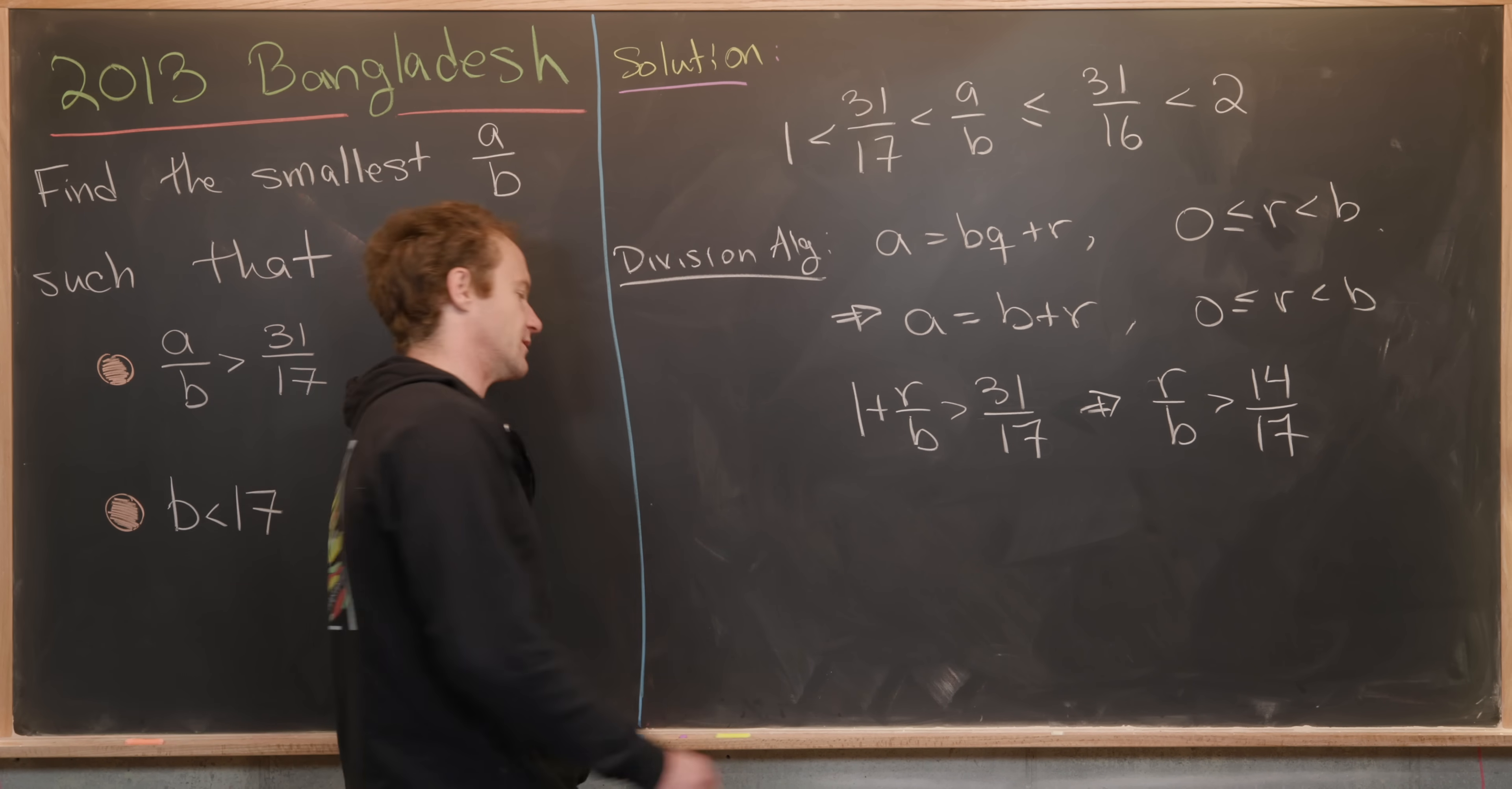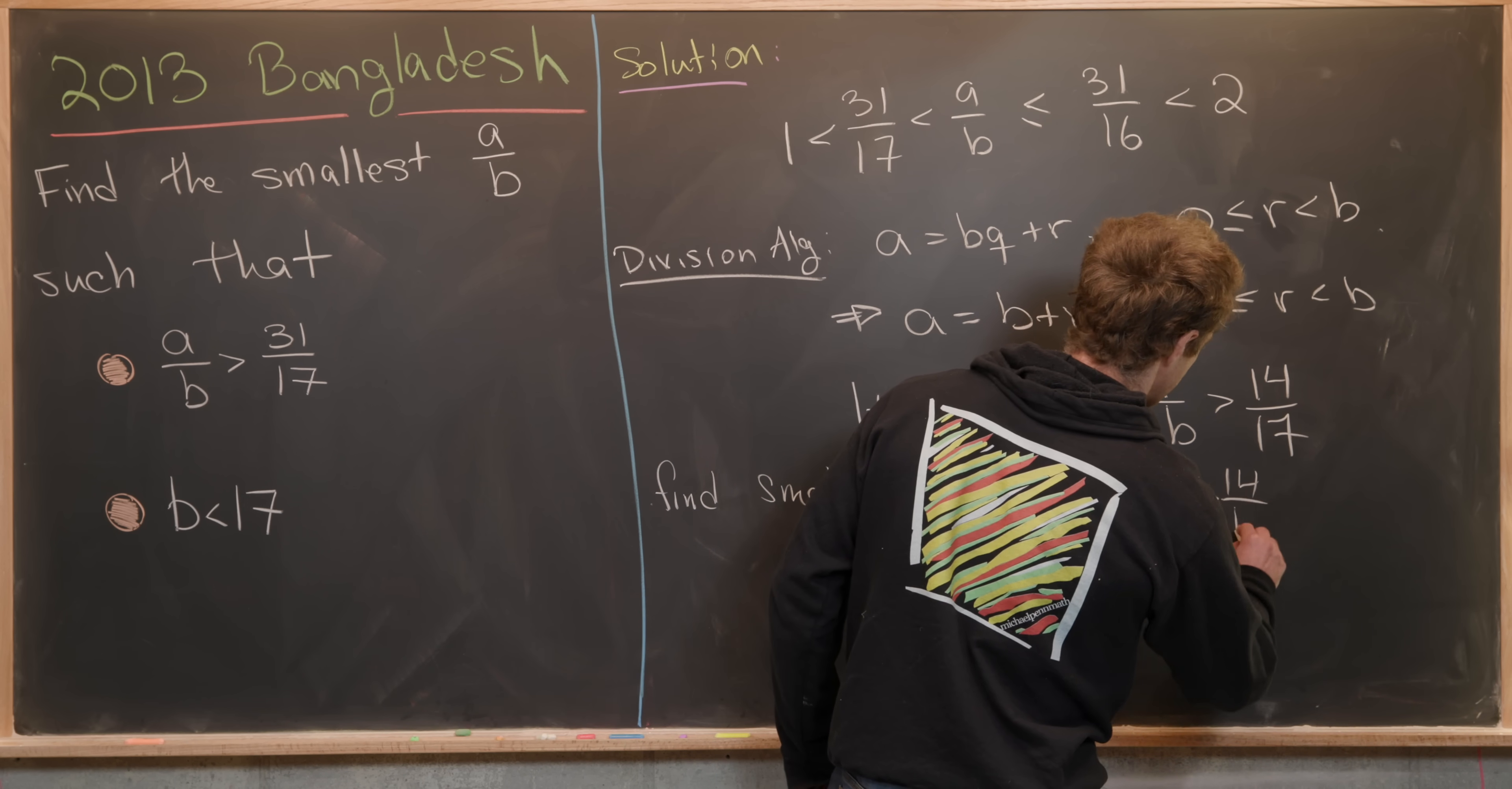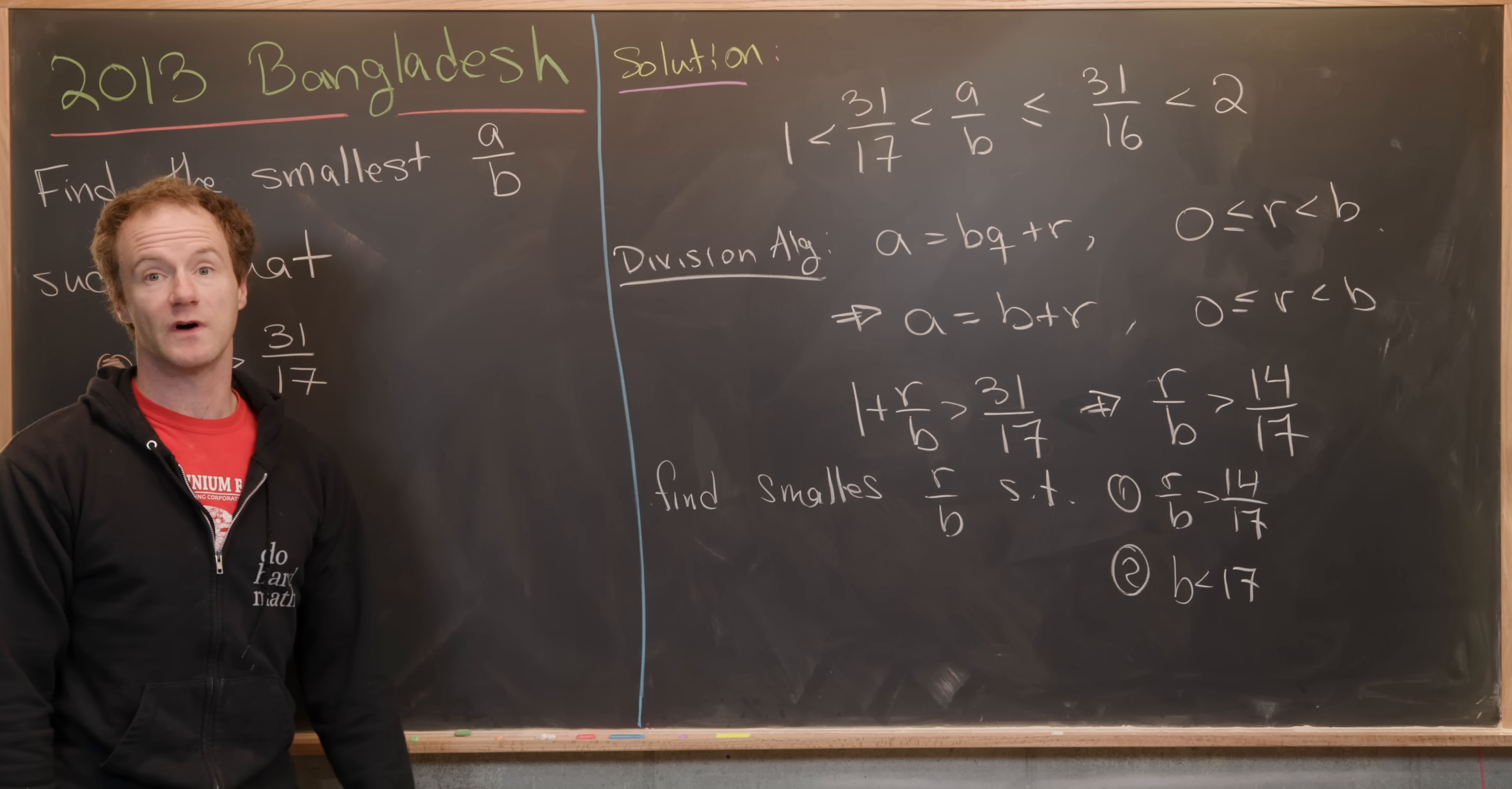Now we can rewrite our problem. We want to find the smallest R over B such that R over B is bigger than 14 over 17, and B is less than 17. That's going to be easier to work with.